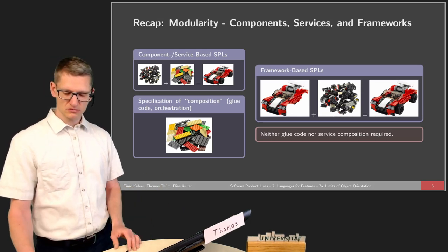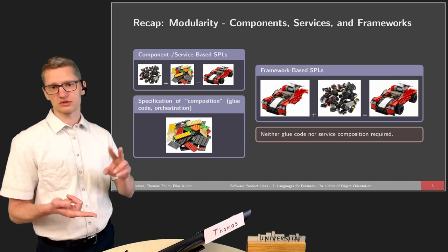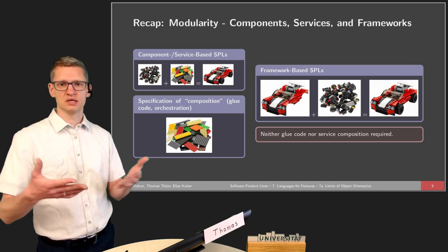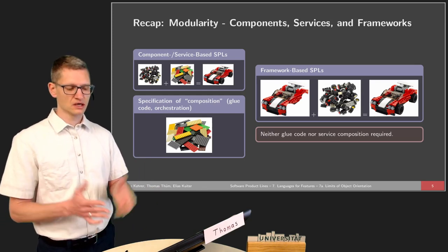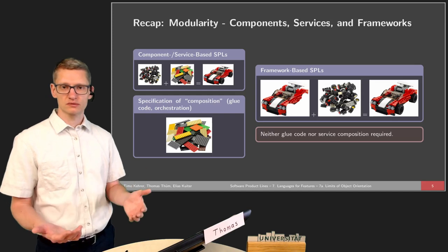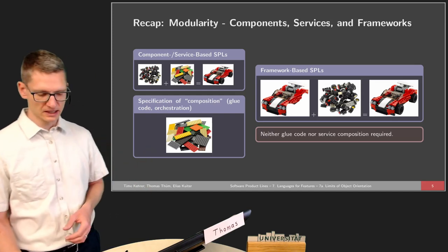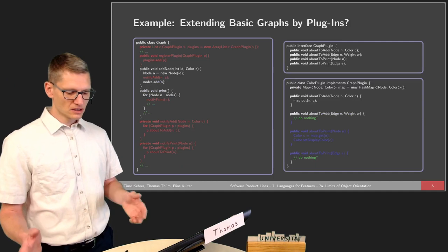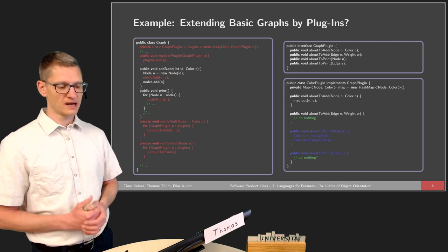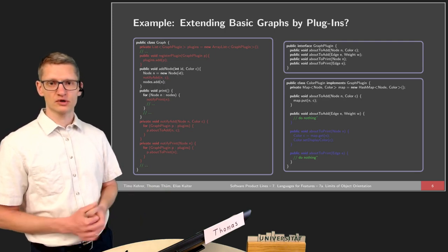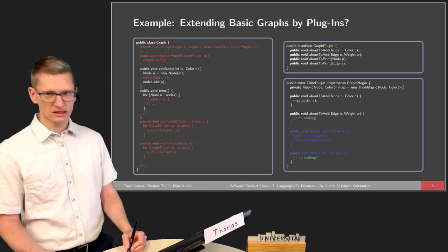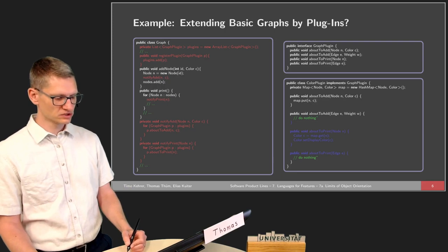We talked about these modularity concepts in object orientation, design patterns, and at the level of components. These can be arbitrarily combined — even if using frameworks with plugins or components, we can still use object-oriented programming and design patterns. We looked at an example in the last lecture illustrating how to use plugins in our graph product line, which is our running example for the course. The basic principle is that a graph accesses so-called graph plugins, which is basically an interface.